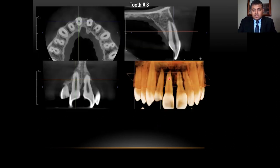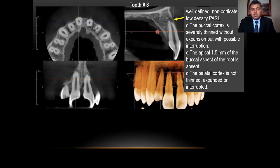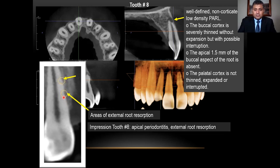Looking at tooth number 8 on the same scan: there is periapical radiolucency. The buccal cortical plate shows thinning but no expansion; the palatal cortical plate looks unremarkable with no breakdown. On tooth number 8, there are very small areas of external root resorption. The impression for tooth number 8 is apical periodontitis along with external root resorption.